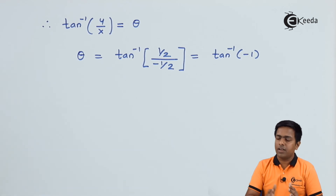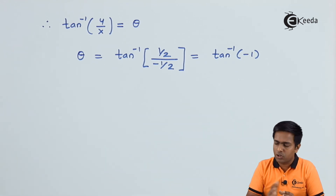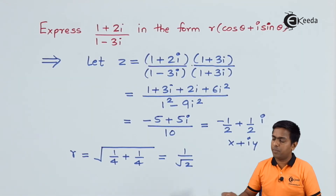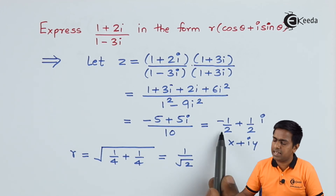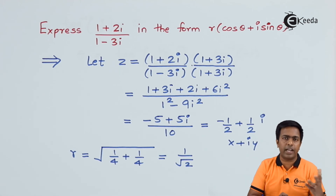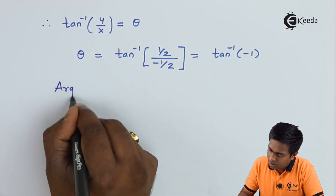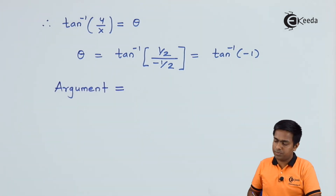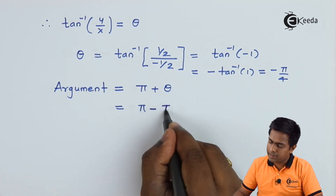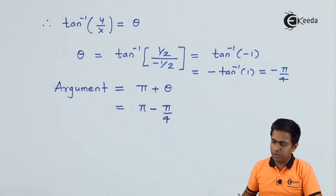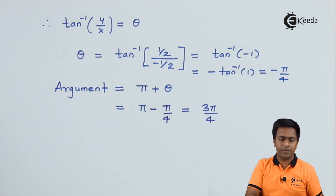The complex number -1/2 + (1/2)i lies in the second quadrant, because x is negative and y is positive. Since the number is in the second quadrant, the argument is π + θ. Substituting θ = -π/4, the argument becomes π - π/4 = 3π/4.